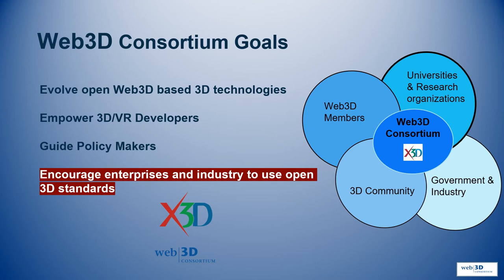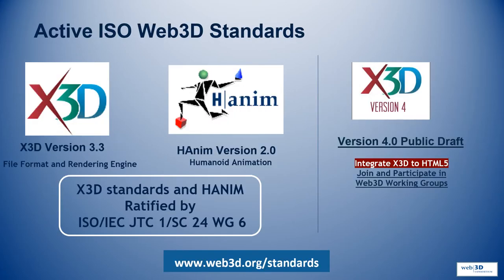We have two active standards: X3D version 3.3 and HANAM version 2.0. These are both ISO ratified. Currently, X3D version 4 is in draft. It's integrated with HTML5. This is a great opportunity for you to join and participate in our working groups and be a part of this development.